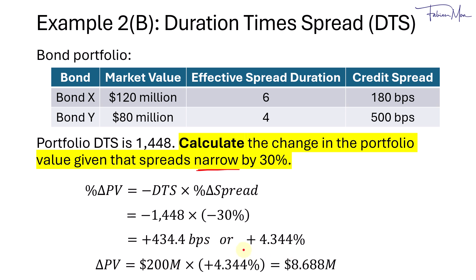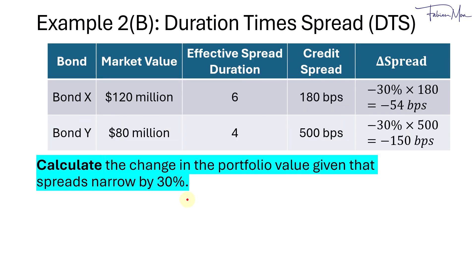Alternatively, if we don't want to use DTS, we can use spread duration. To do so, we first need to calculate the absolute change in the spread. Given current spreads of 180 and 500 basis points for the two bonds, we multiply by negative 30%. Bond X's spread declines by 54 basis points, and Bond Y's spread declines by 150 basis points.